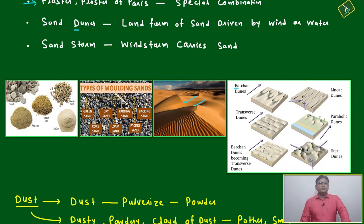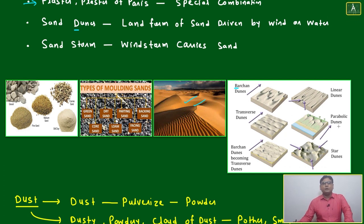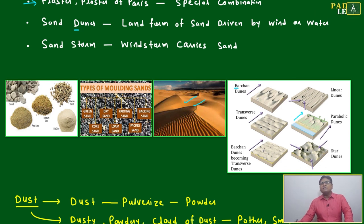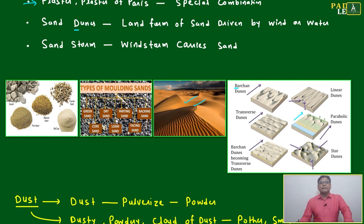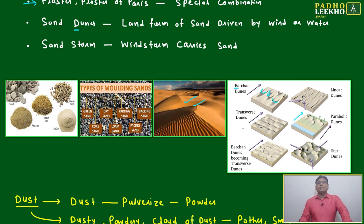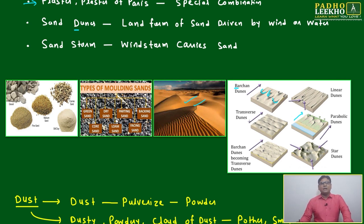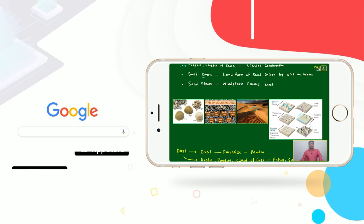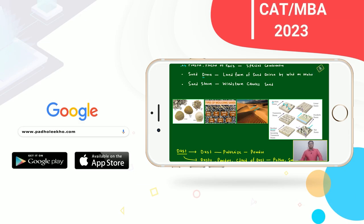Here we can see different dune types: barchan dunes, linear dunes, and parabolic dunes. The type of shape and structure of dunes depends on the direction and number of winds affecting a particular area. There are also transverse dunes, barchan, and star dunes. If winds come from three directions, a star dune will form.